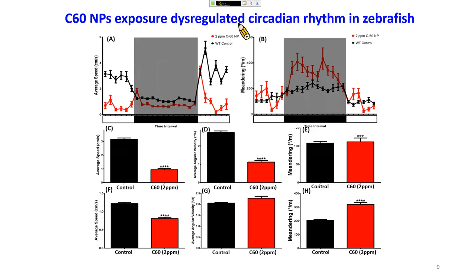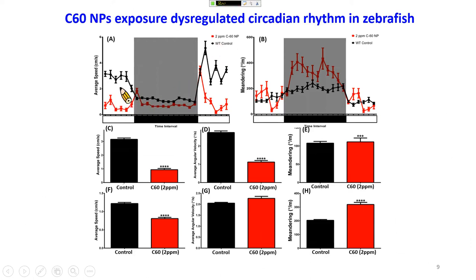After establishing the methodology, we studied carbon-60 fullerene exposure. We exposed fish to C60 at a 2 ppm level and detected the circadian rhythm. We found something very interesting — in either the day or night cycle, the activity went down. This is the chronogram, and here is the quantification showing that both day and night activity results go down.